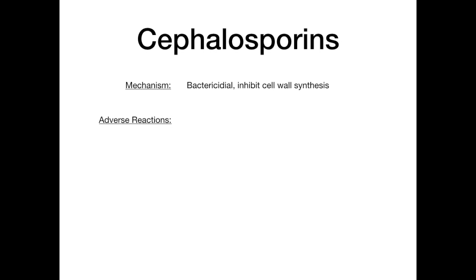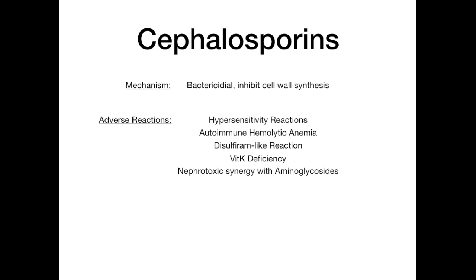The adverse drug reactions for cephalosporins are relatively unique and worth knowing. You can get hypersensitivity reactions, autoimmune hemolytic anemia, a disulfiram-like reaction (which is always a test favorite), vitamin K deficiency, and nephrotoxic synergy specifically with aminoglycosides. If someone is on both a cephalosporin and an aminoglycoside, you essentially double the risk of nephrotoxicity — cephalosporins potentiate the nephrotoxicity seen with aminoglycosides.